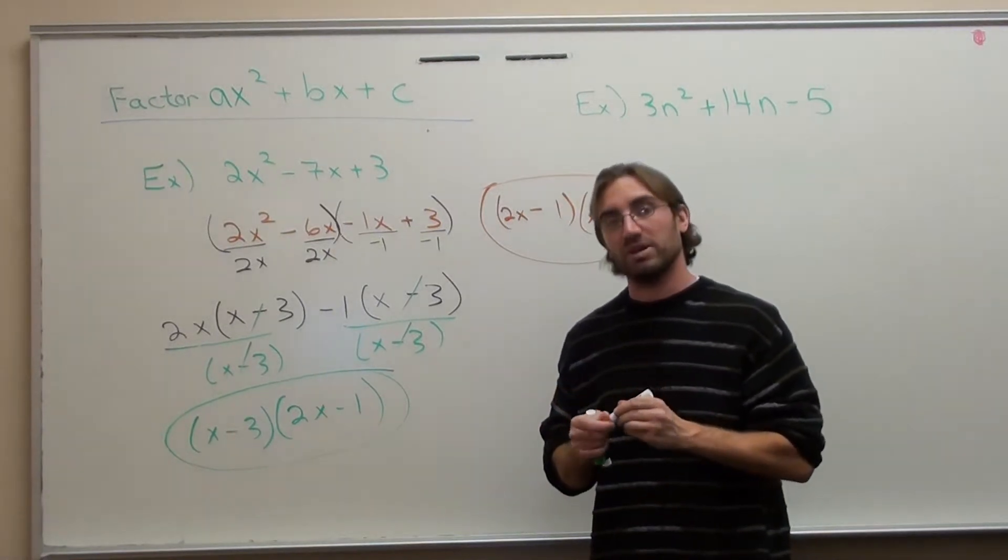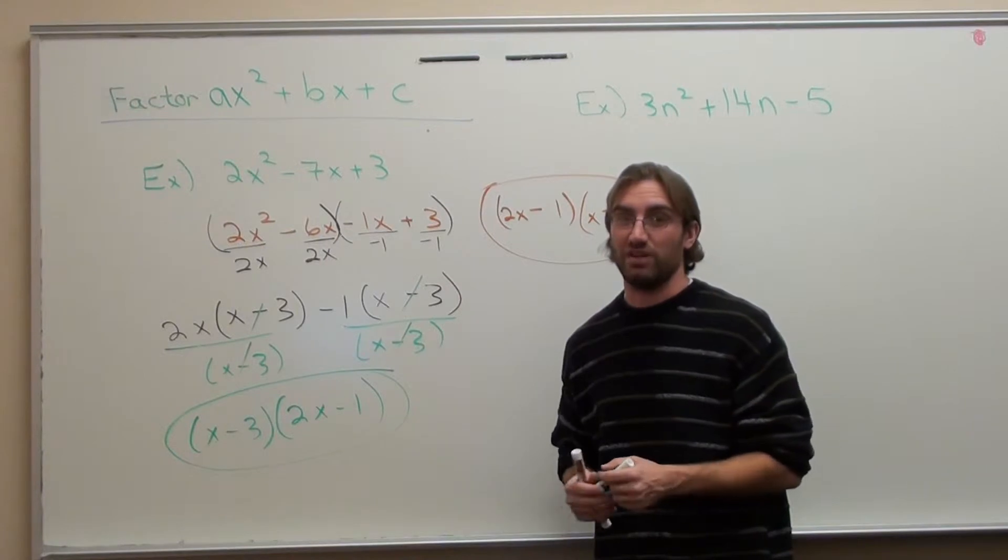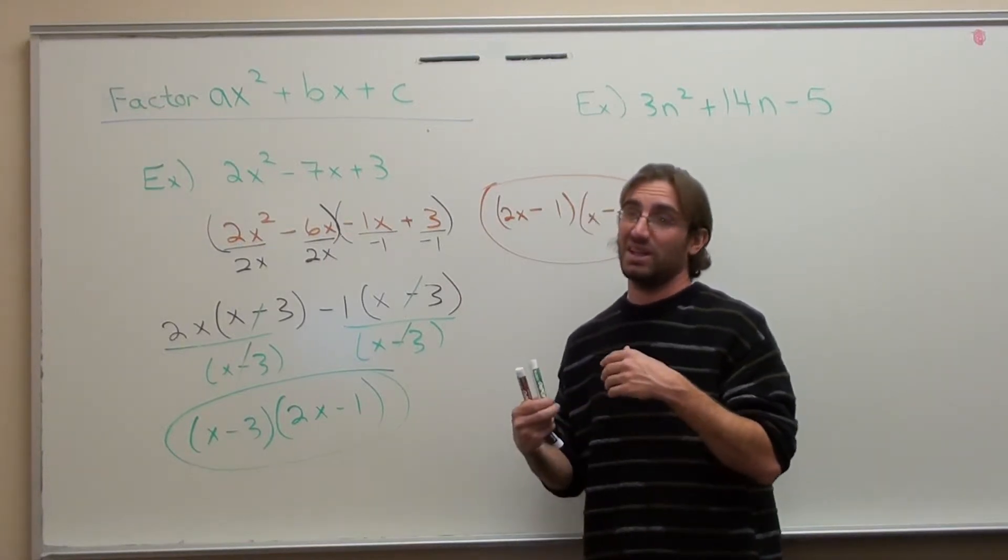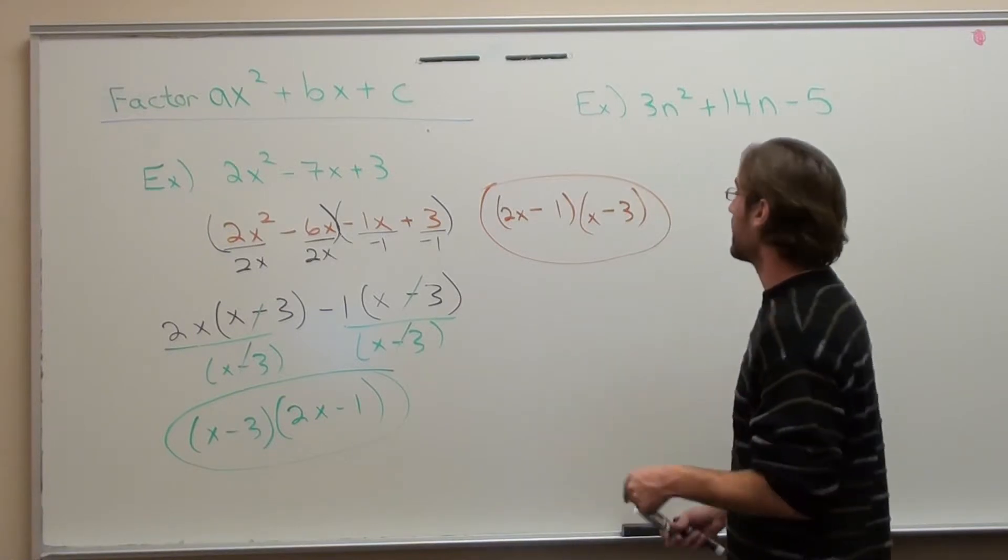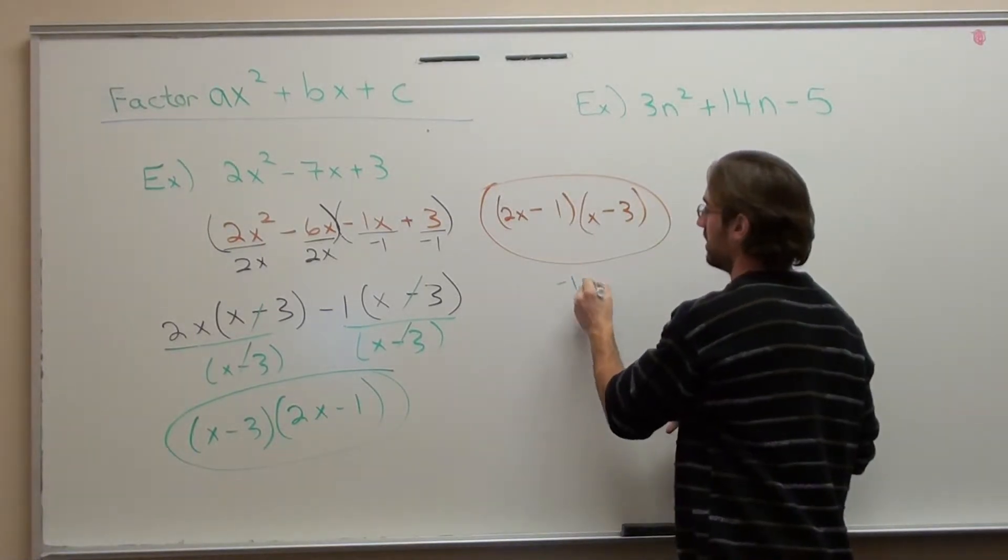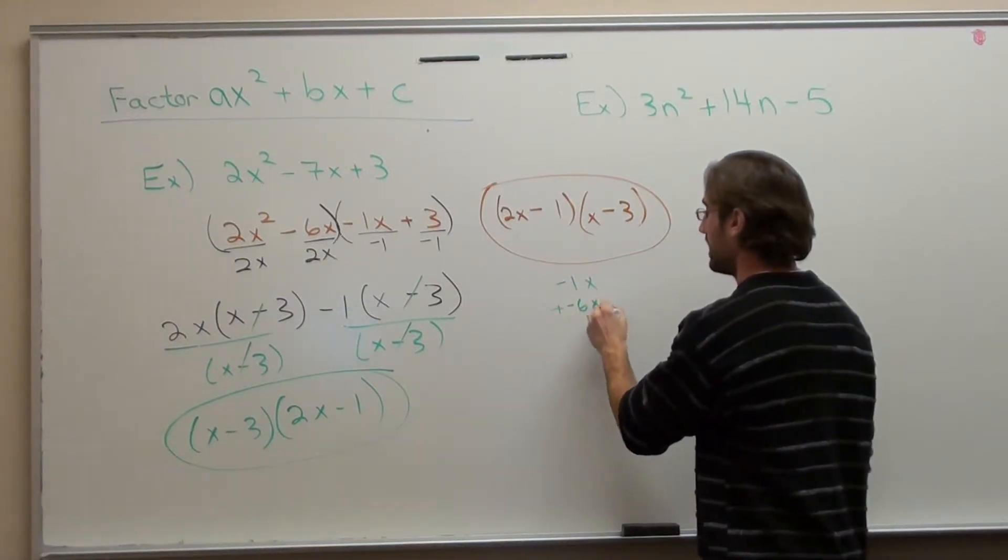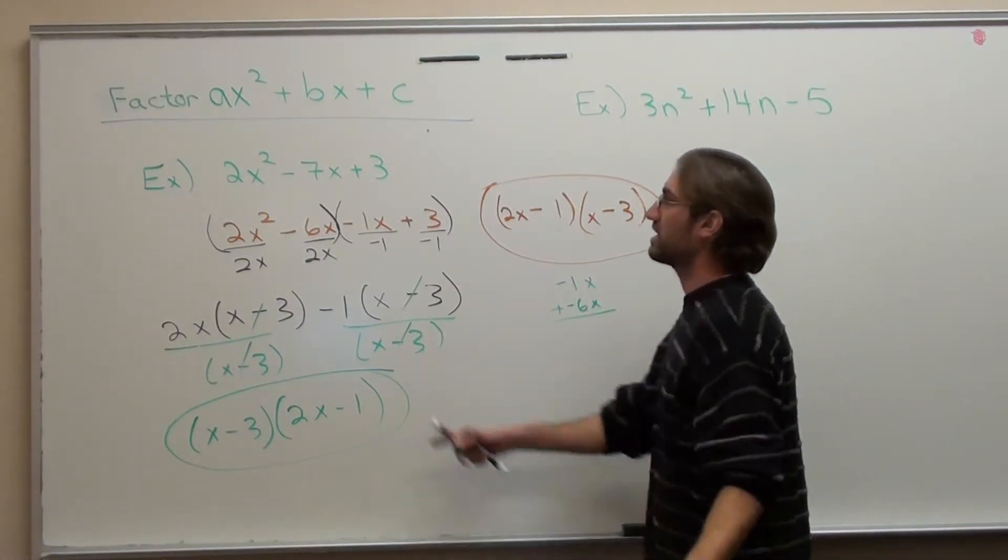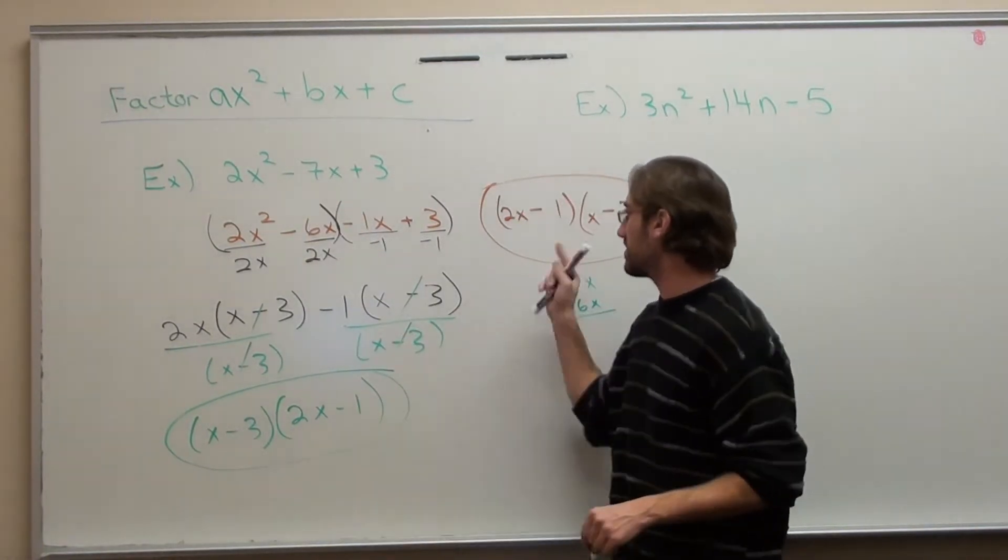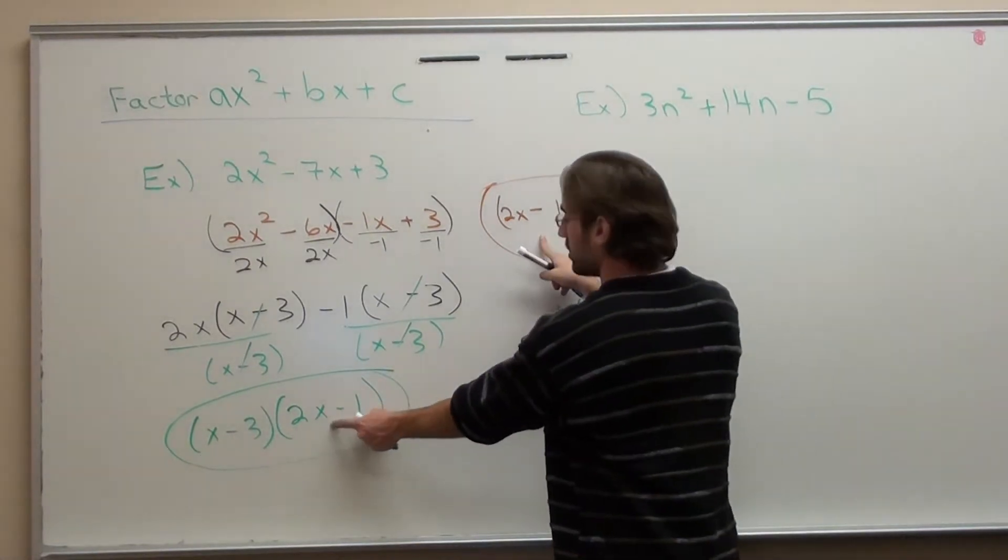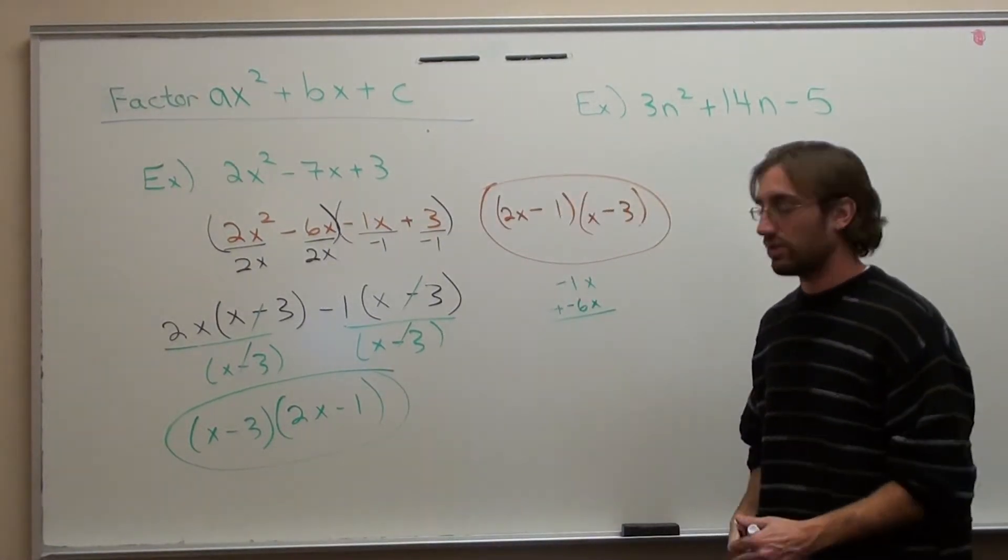I've been practicing this enough. You can probably do this too with a little bit of practice. But not every student can do that off the top of their head. If you want to check it, check it. -1 times x is -1x plus 2x times -3 is -6x. -1x plus -6x is -7x. So that's the same as that. (2x - 1)(x - 3). Two different ways to do it.